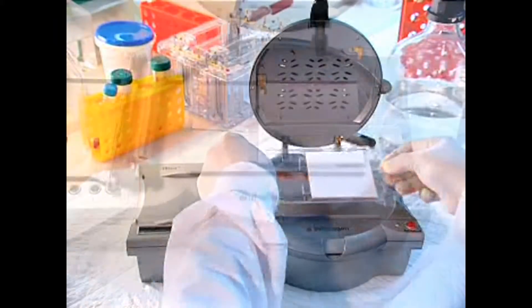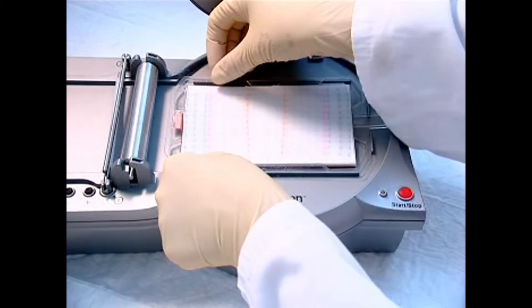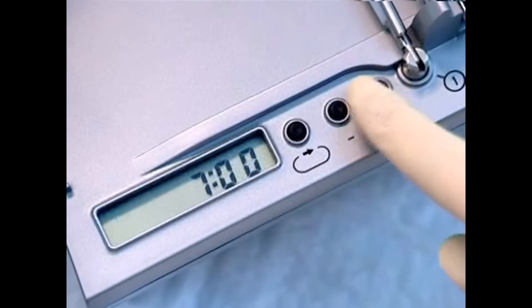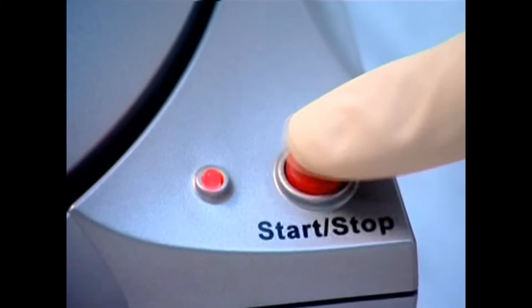The iBlot system transfers proteins from mini or midi size gels, even two at a time. The different run programs and precise time control help optimize transfer of every sample and protein size.